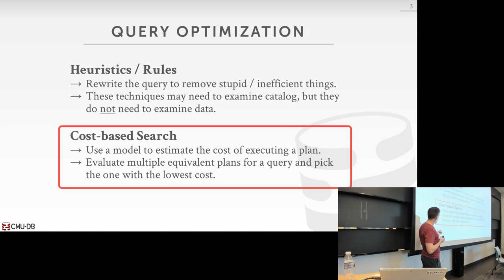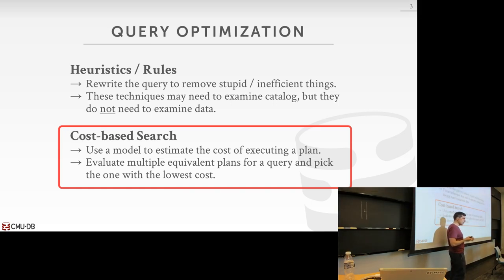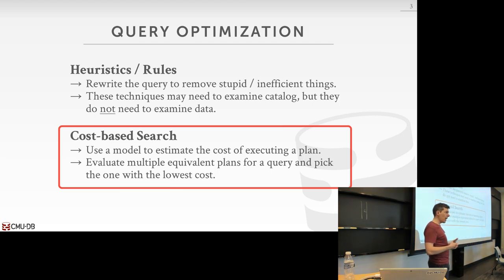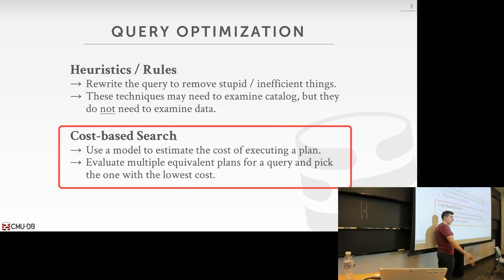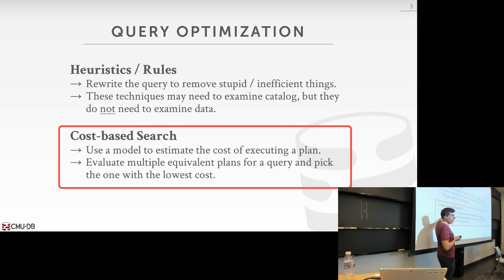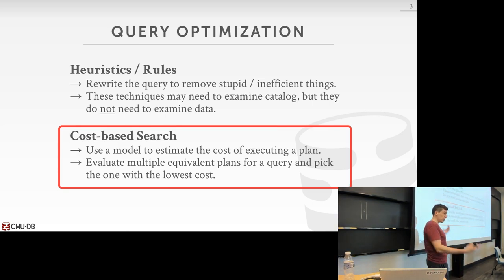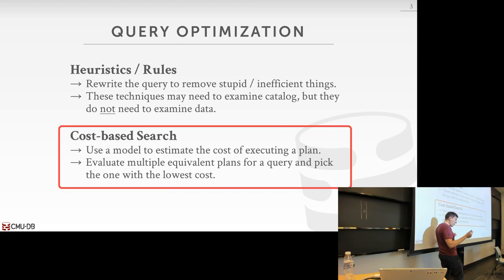Last class, when we started talking about query optimization, we focused on how to apply rules and heuristics to make changes to the query plan without having to examine the data or understand what the database actually looks like on the inside. We may need to look at the catalog to understand what our attributes are, whether they're unique, and whether we have foreign keys. But we don't need to know anything about the distribution of values or the number of tuples.